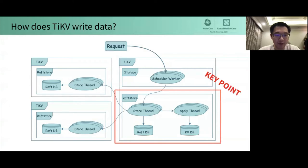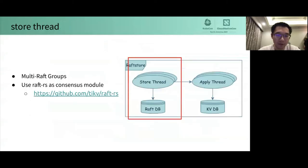Each write of RaftStore contains a time to RaftDB write, KVDB write, network roundtrip, and so on. So it is the key point to reduce the write latency in the RaftStore layer. To this end, we focus on the store threads first in the RaftStore layer. Store threads handle the work of multi-Raft groups and use Raft-RS as a consensus algorithm module.